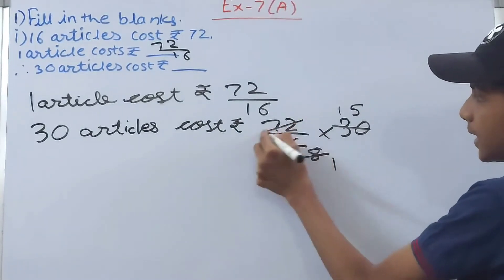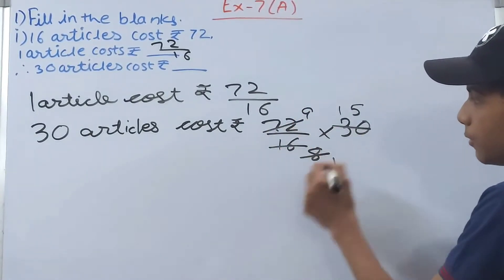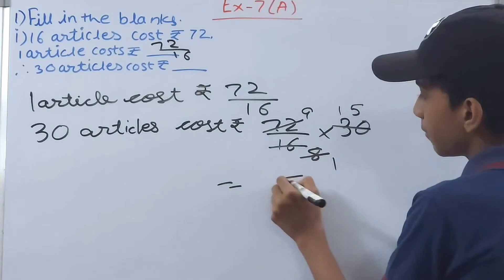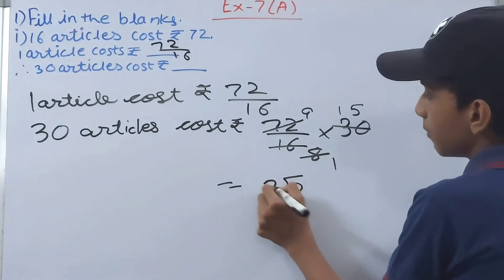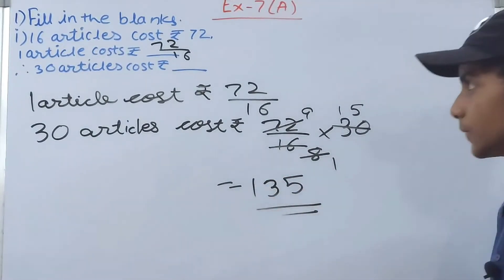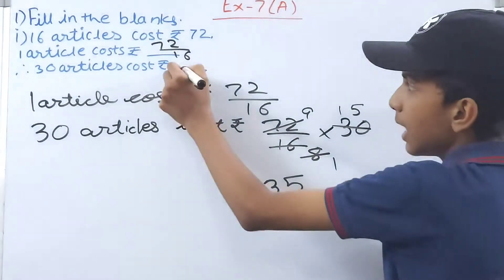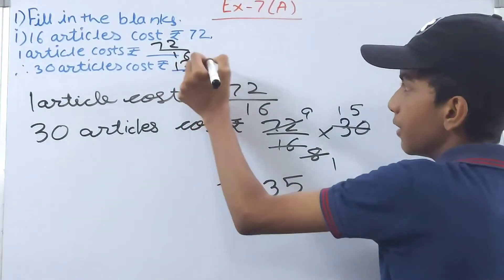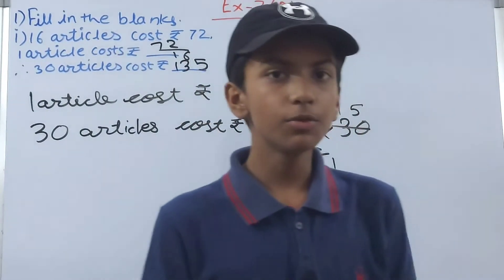Cut this, 8 and 15 times. Cut this one and cut this, 9. So 9 into 15 will be how much? 9, 5, 45 and 4, so 135. So 30 articles will cost rupees 135. Let's move on to the next part.